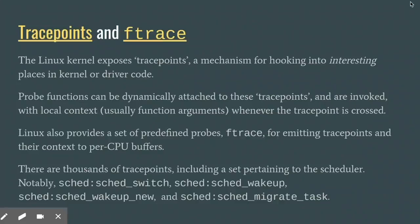And we can get such a trace. Linux provides a hooking mechanism called trace points. Interesting places in the kernel or in driver code can provide a trace point hook, and then probe functions can later attach to those hooks. Those functions are then invoked and provided with some local context whenever that trace point is passed. Linux also provides a suite of predefined probes called ftrace that just emit the events and that context to per-CPU data buffers for later analysis. Usually, trace points are coincident with functions or kernel APIs, and the context is the argument to those functions.